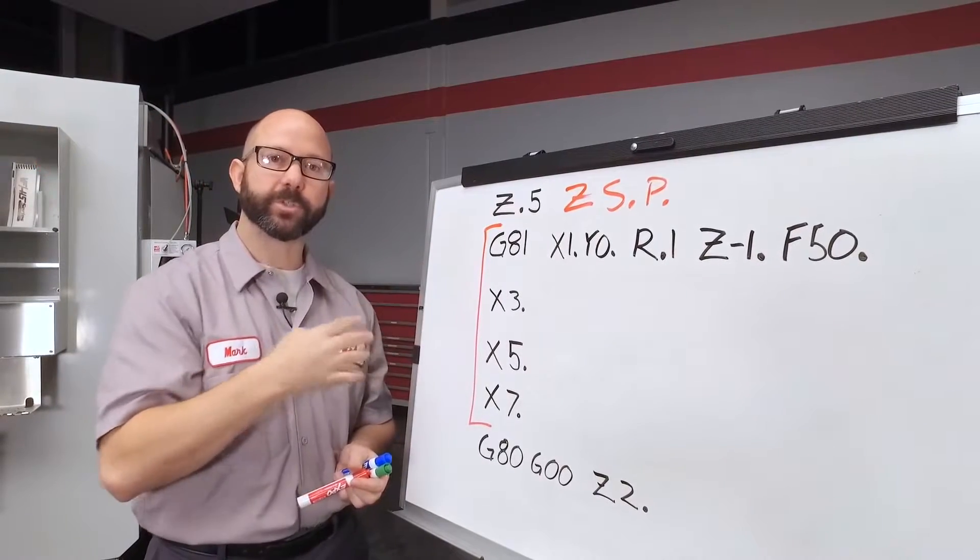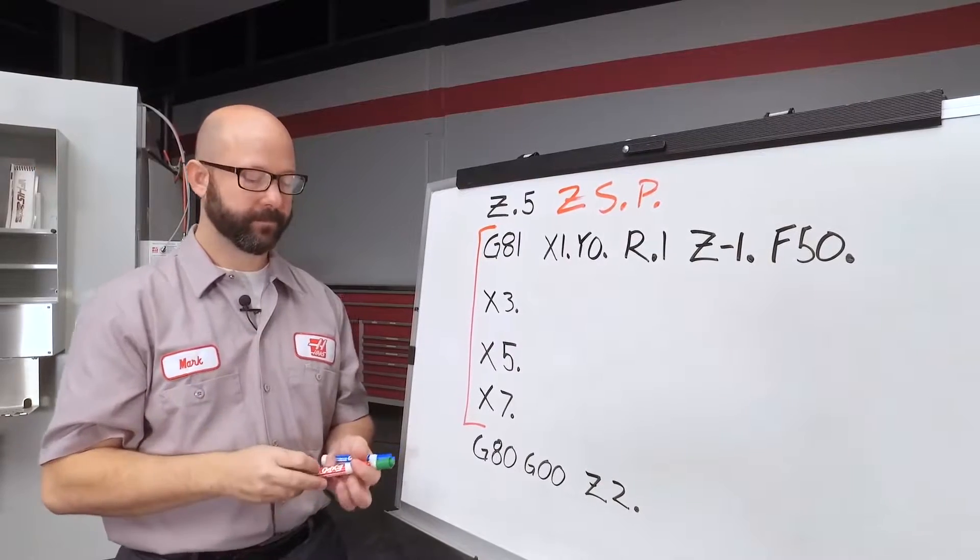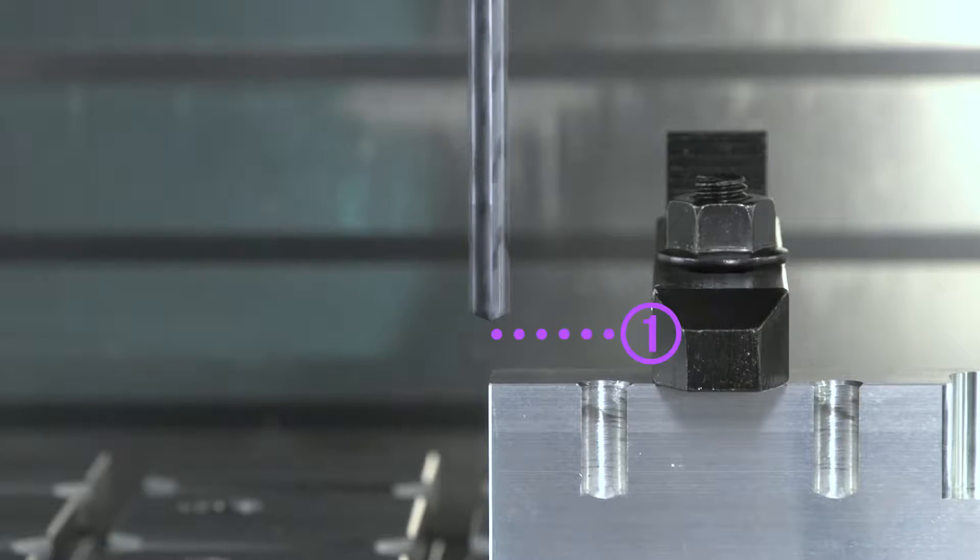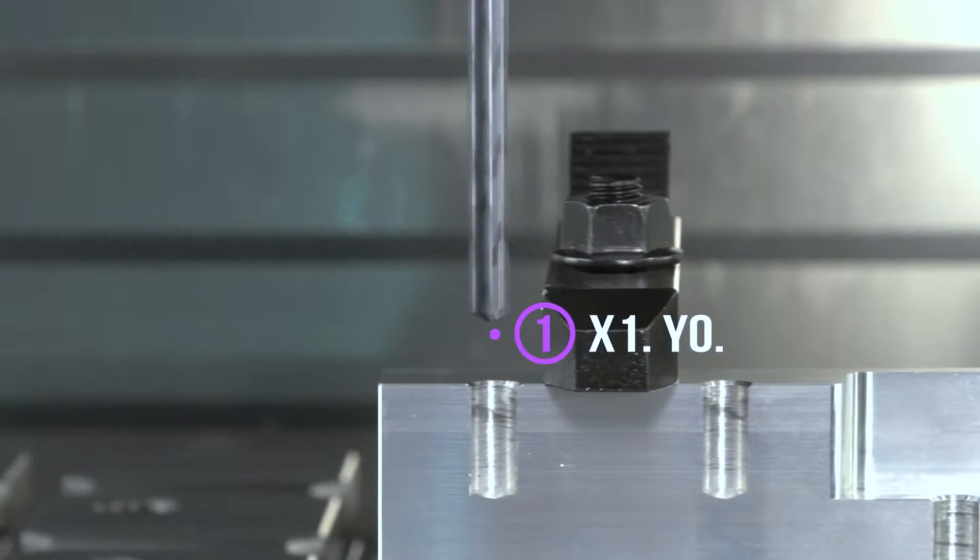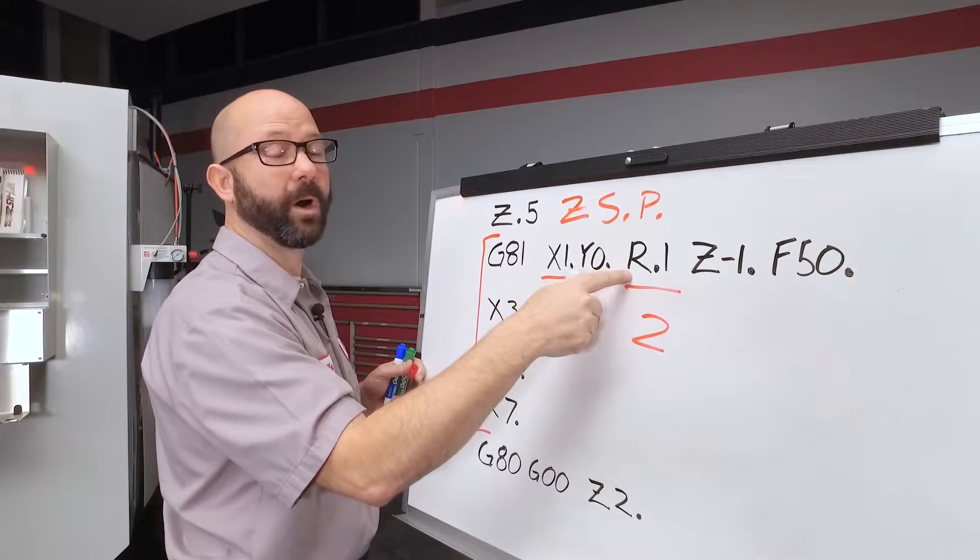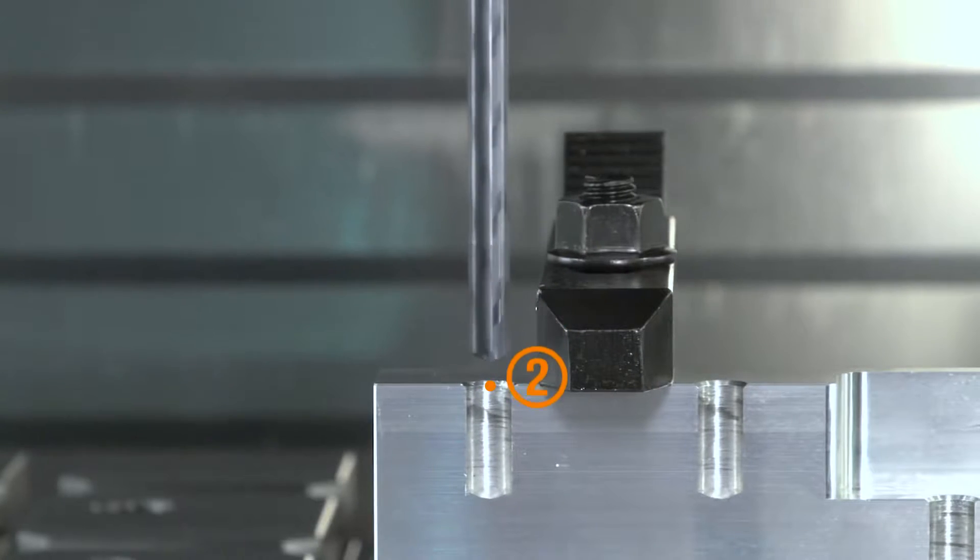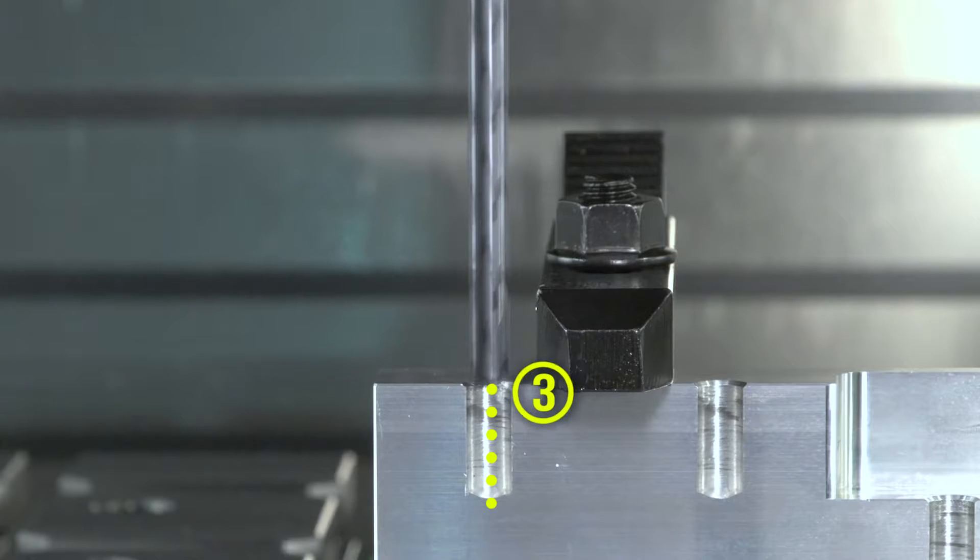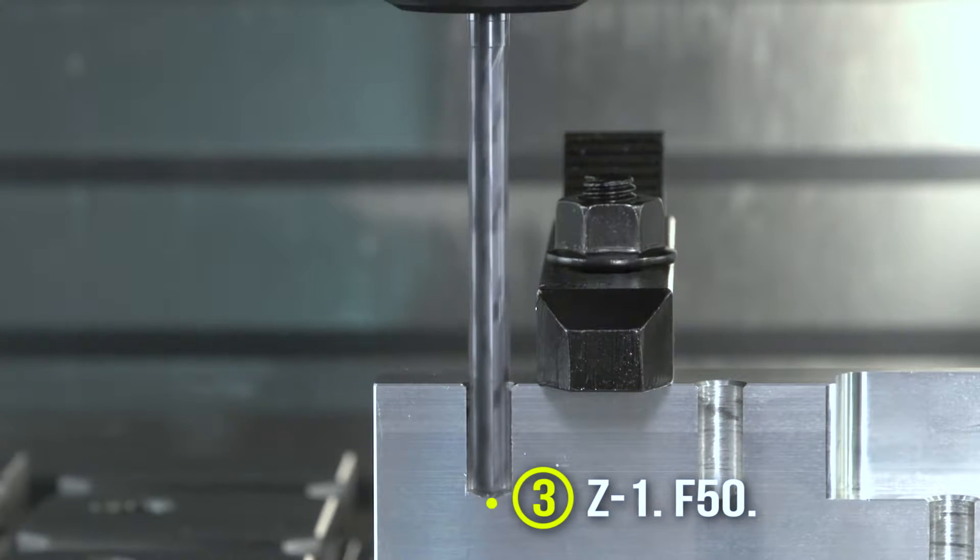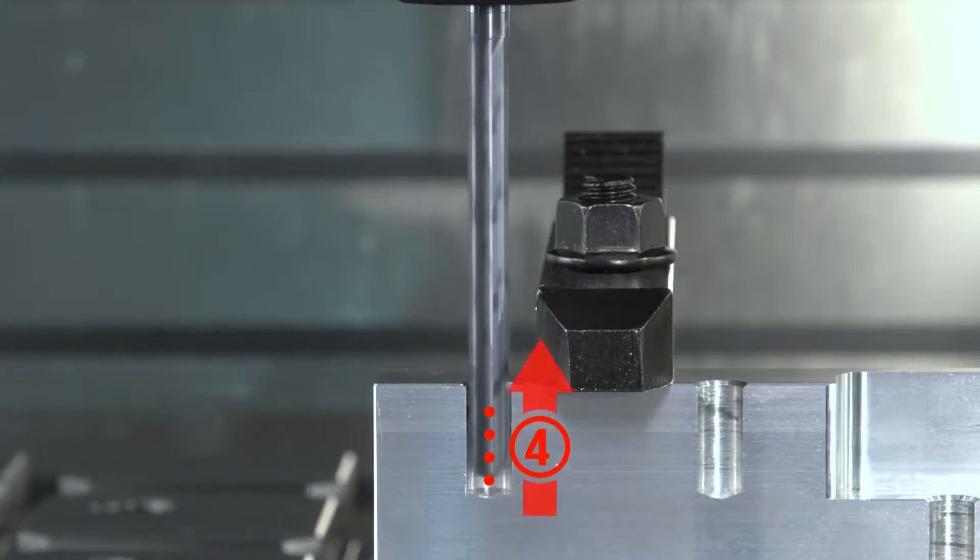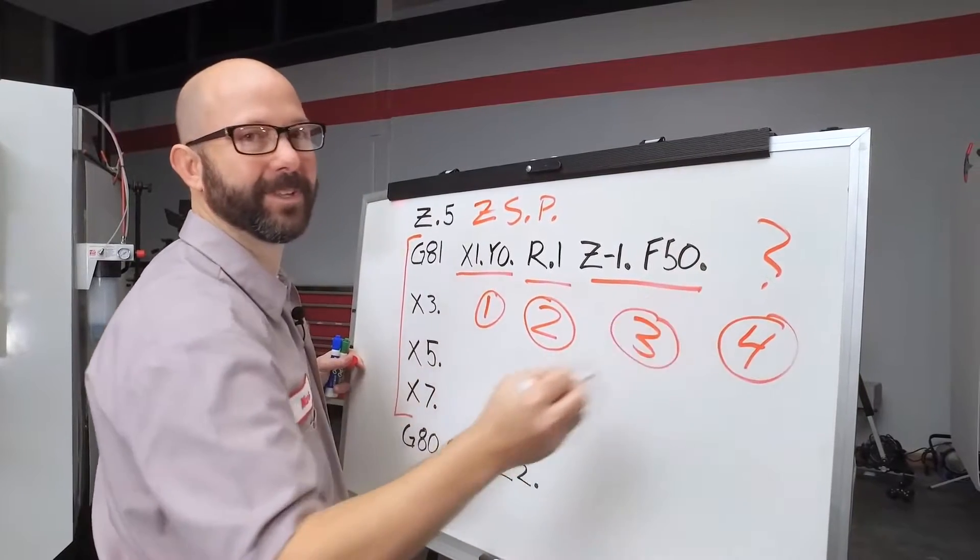With our CAN cycles, the control is going to move in four very predictable ways. One, it's going to position our XY location. Two, the tool is going to rapid from the Z value where it was at to our R plane, R.1. Three, our tool is going to feed to our Z depth. And after it's drilled the hole, it's going to rapid back up to our clearance plane.